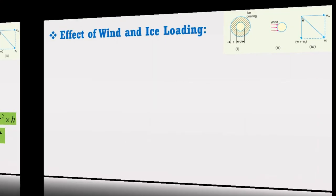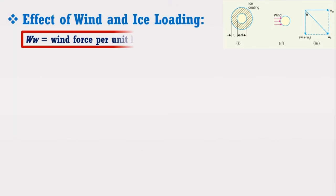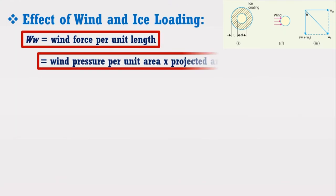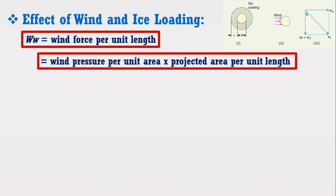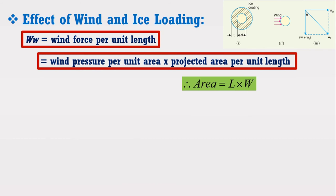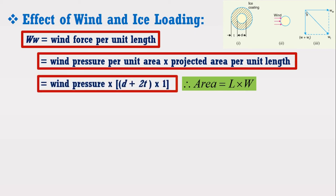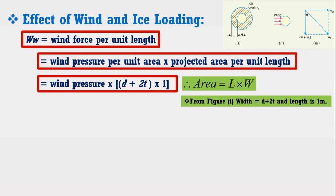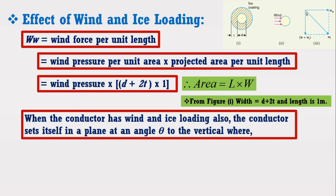Now, Ww is the wind force per unit length, equal to wind pressure per unit area into projected area per unit length. Since area equals length into width, and from the figure width equals d plus 2t with length as 1 meter, putting these values gives the wind force expression. It may be noted that when the conductor has wind and ice loading, it sets itself in a plane at an angle theta to the vertical.